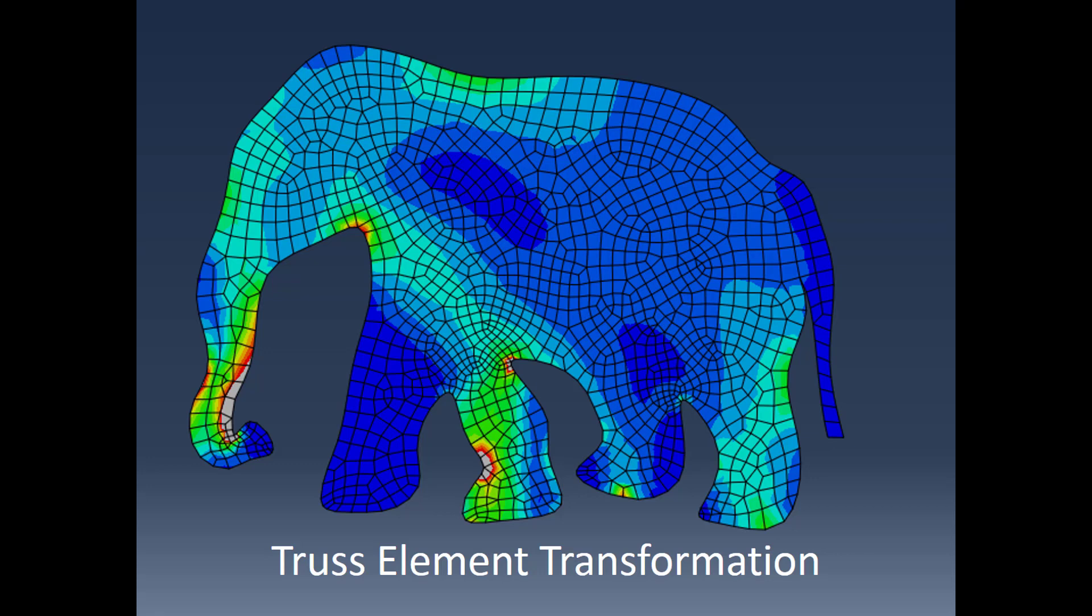In this video we're going to look at what it takes to transform all the information we've developed about bar elements to convert them into truss elements. So in other words, to be able to use the tension compression member in two- or three-dimensional space.